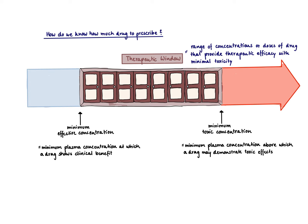So let's start with the therapeutic window. This is a range of concentrations or doses of a drug that provide therapeutic efficacy with minimal toxicity. If we look at a dose-response curve, you have on the x-axis the concentration of the drug or the dose of the drug, and here we have the drug's effect. Usually you get the sigmoid curve.